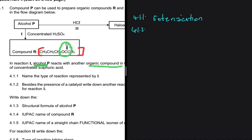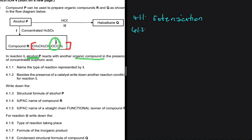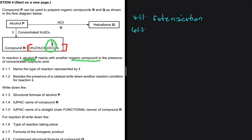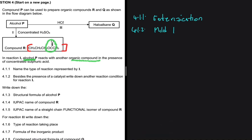For 4.1.2, the equation says besides the presence of a catalyst, write down another reaction condition for reaction one. In esterification, we need concentrated H2SO4 and mild heat for the reaction to take place. If you've done this experiment in school, you will remember that you had to indirectly heat the substances first before the reaction could take place, and you would start wafting.